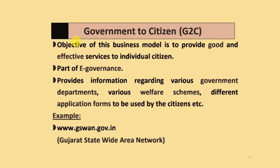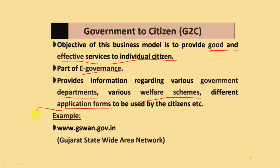Government to Citizen (G2C): the objective of this model is to provide good and efficient services to individual citizens of India. It is part of e-governance and provides information regarding various government departments, welfare schemes, and application forms to be used by citizens.